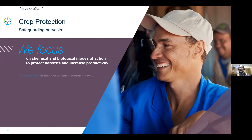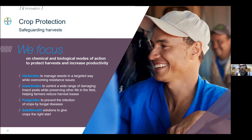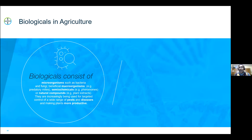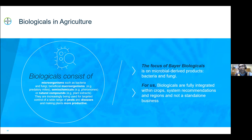We also have a crop protection business where we work on various chemical compounds and formulations to control pests and diseases — fungicides and seed growth enhancers. Right from identifying molecules to seeing how they could be used, all those studies go on in the organization. We also have manufacturing plants all over the world, including India. Additionally, we have a biologicals business where people with microbial expertise identify microorganisms that could enhance the value of our products through better seed coating and so forth.